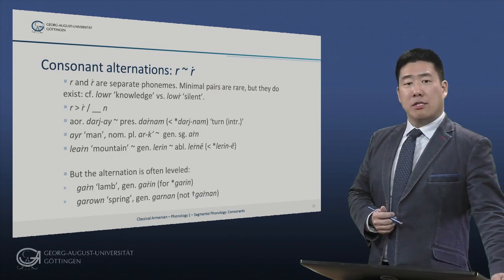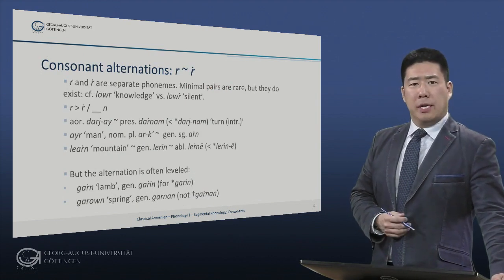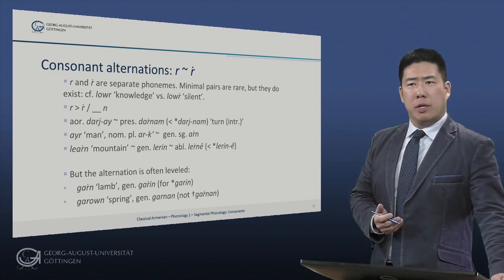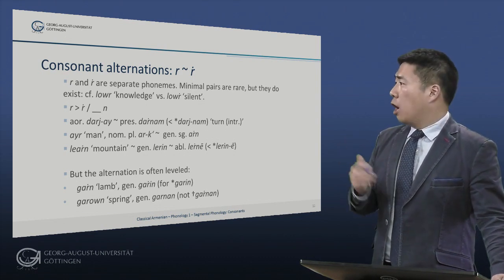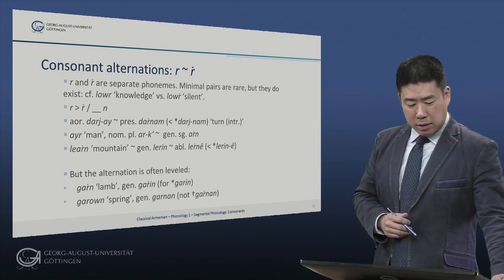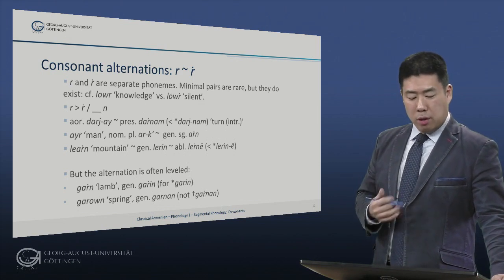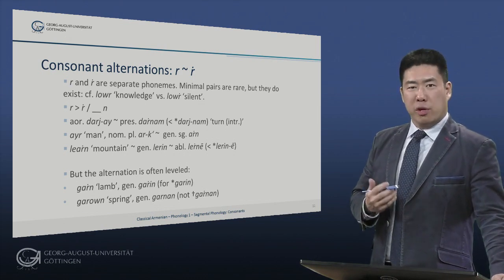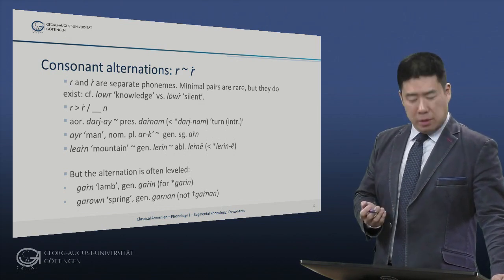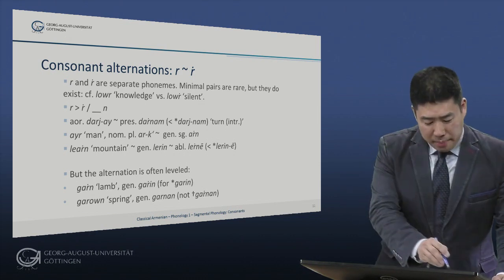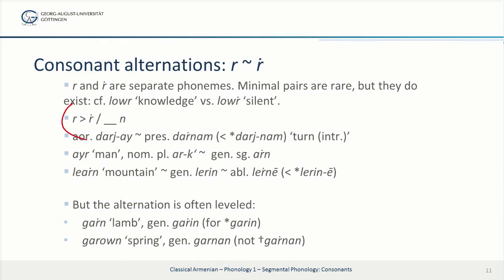Let's now look at consonant alternations in classical Armenian. One of the most important is the alternation between the two different kinds of R sounds, R and R-dot. They are separate phonemes, although minimal pairs are rare — for example, 'lur' meaning knowledge versus 'lur' meaning silent. One rule which has almost no exceptions is that R becomes R-dot before N.